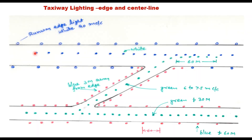The lighting for the taxiway should be such that it is not confused with runway lighting. The runway edge is marked with white lights spaced 90 meters center to center, whereas the taxiway edge is marked with blue lights placed 3 meters from the edge and spaced approximately 60 meters center to center. The center line of the taxiway is provided with green lights spaced 6 to 7.5 meters center to center. Whenever there is a crossing of the runway and an exit taxiway, the center line of the exit taxiway extends up to 60 meters onto the runway as well. That is how taxiway lighting — edge and center line — are provided.